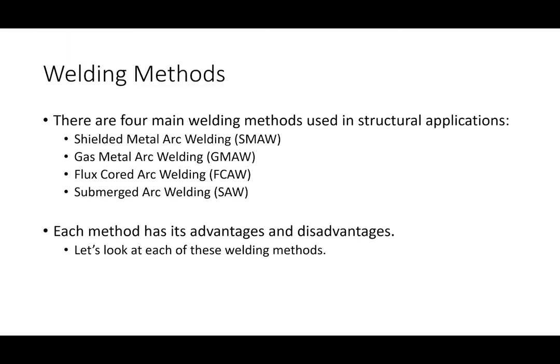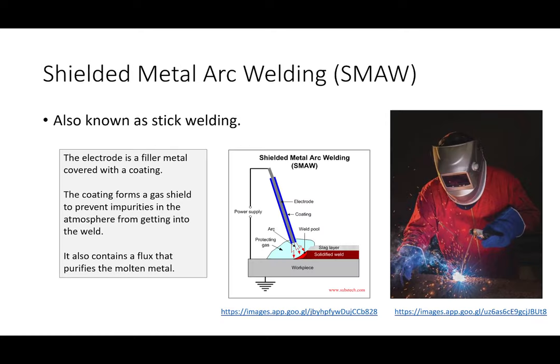Each welding method has its advantages and disadvantages. The most common — every fab shop can do this — is stick welding. In general, the way welding works is you're completing a circuit. You have your welding machine with two ends, almost like jumper cables. One is attached to the workpiece, and the other is attached to the electrode. This is a welding electrode — I'm going to pass it around.